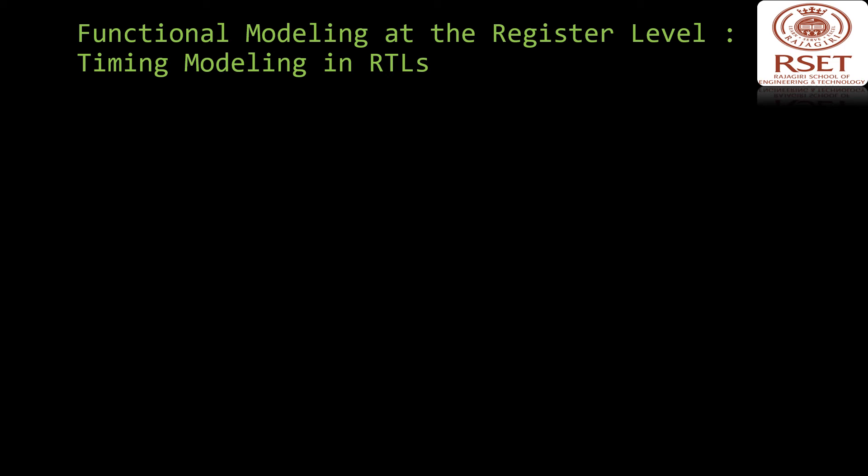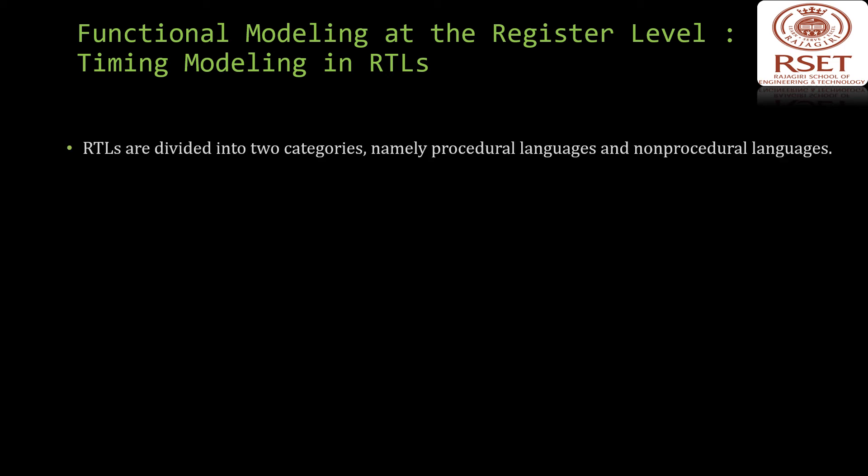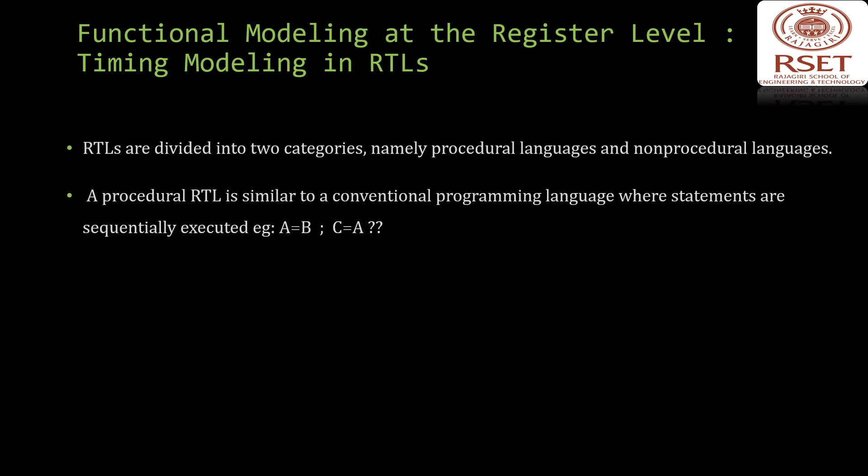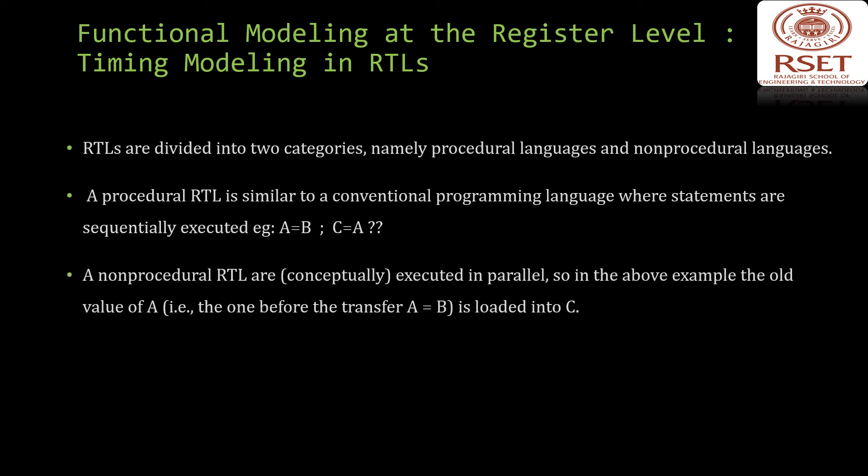The second method in register-level functional modeling is timing modeling in RTLs. RTLs are divided into two categories: procedural and non-procedural. A procedural RTL is similar to a conventional programming language where statements are sequentially executed — so in 'a = b; c = a', the new value of a is transferred into c. Many procedural RTLs directly use languages like C or Pascal. In a non-procedural RTL, statements are executed in parallel — so 'a = b; b = a' literally exchanges the contents of a and b.